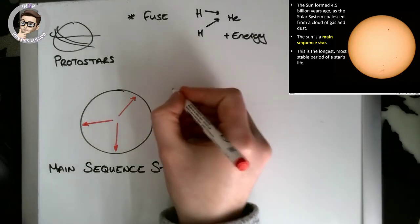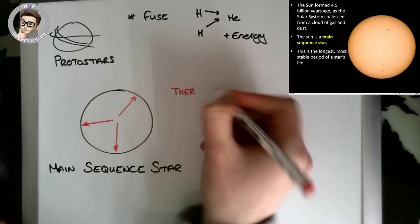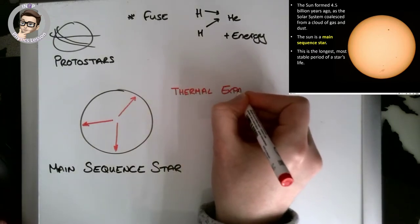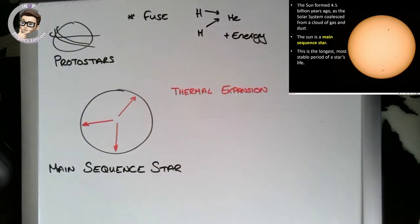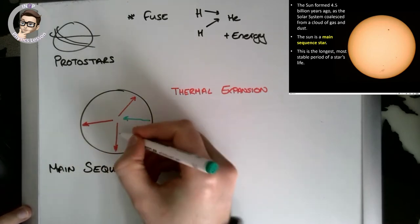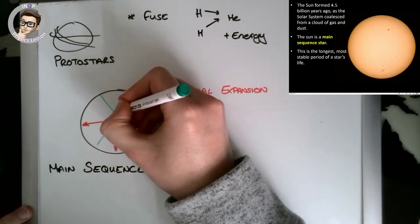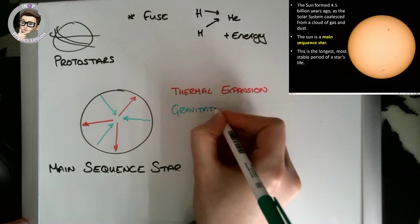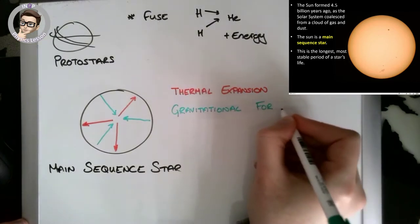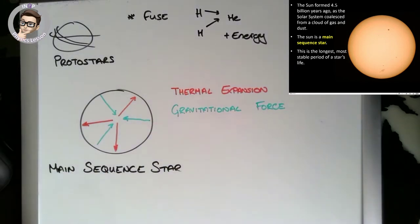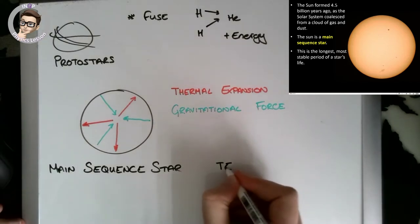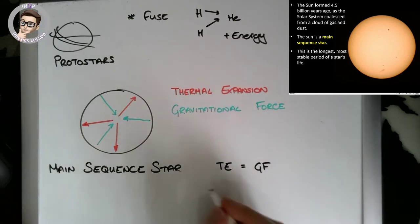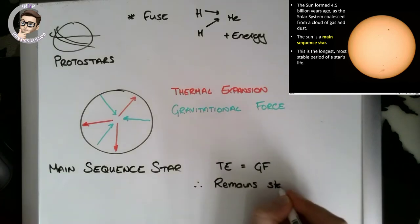The two forces are: thermal expansion, because the hot gases are moving quickly and trying to escape from the star, and the gravitational force pulling back the edges. These two are balanced. In a main sequence star, thermal expansion equals gravitational force, so the star doesn't get any bigger — it remains stable with a stable size.